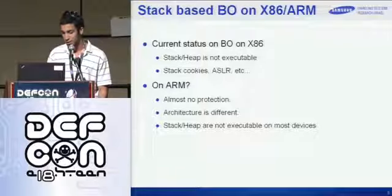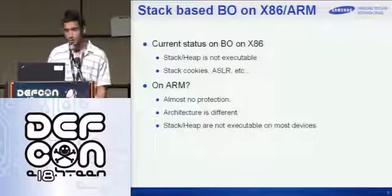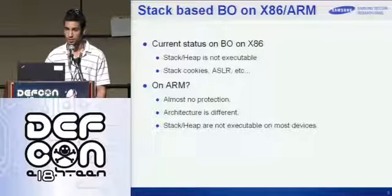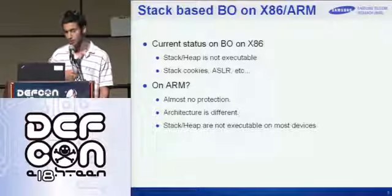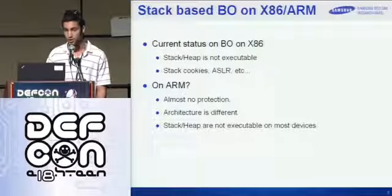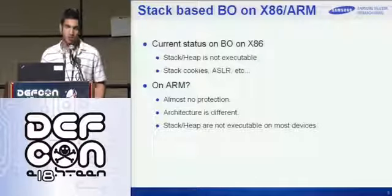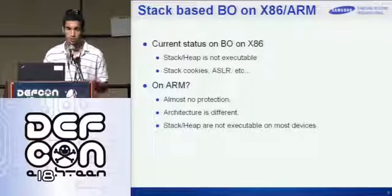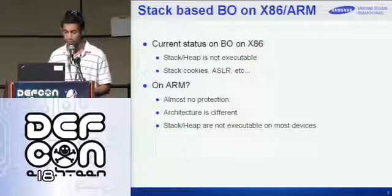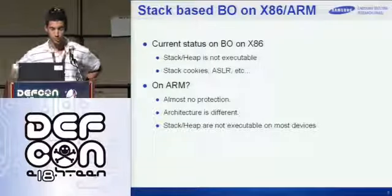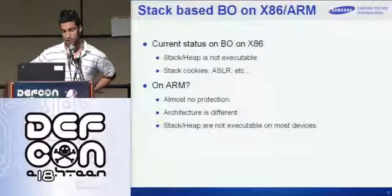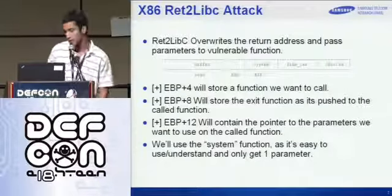After the very beginning, we'll look over the status of buffer overflows on x86. These days you can see many defenses — the stack and heap is not executable, you've got stack cookies, ASLR is very well randomized. It's really hard to bypass, especially if you've got all of the vectors. On ARM, it's quite different — the architecture is different, so you have to adjust. The stack and heap are not executable on most devices, but you can see ASLR — there's a PAX patch for Linux. So now you can see ASLR being implemented, but it's not mainline yet.